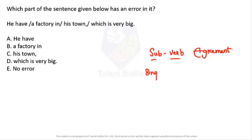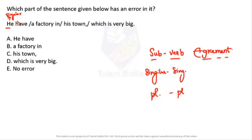Here 'he' is a singular subject. With a singular subject, I can only use a singular helping verb. Can I say 'he have a pen'? No. It should be 'he has.' Whenever 'he' is used in simple present tense, only 'has' should be used. So the error is in part A, and that's the answer.